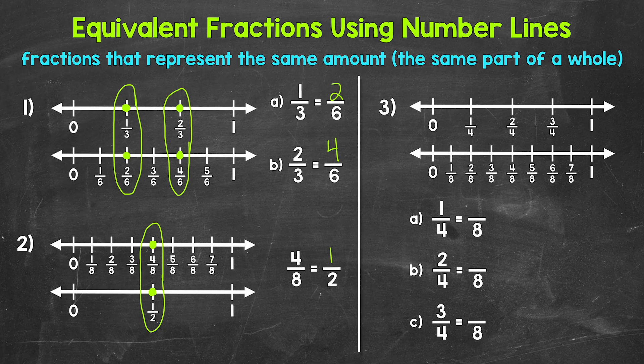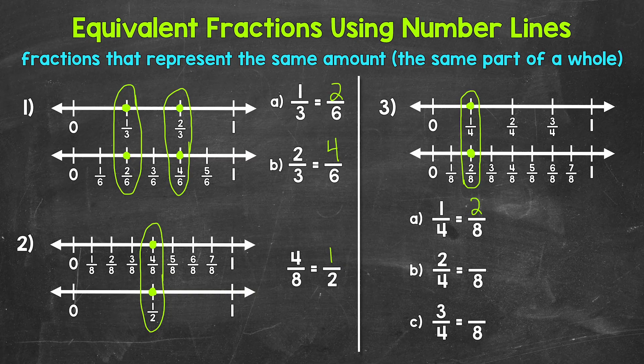Lastly, let's take a look at number three, where we have a number line showing fourths and a number line showing eighths. We're going to find three equivalent fractions here. Let's start with part A: one fourth is equivalent to how many eighths? One fourth is right here on the number line, and right below we can see that two eighths is in the same place. One fourth and two eighths are equivalent fractions.